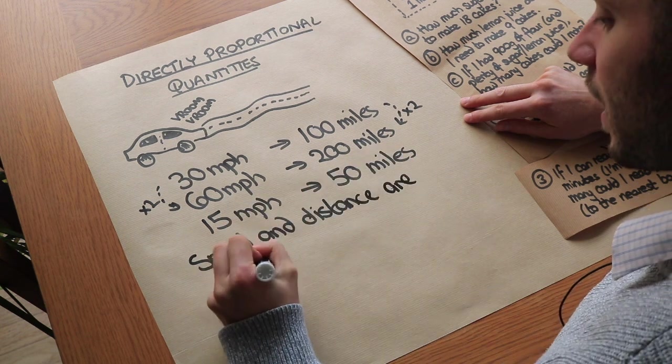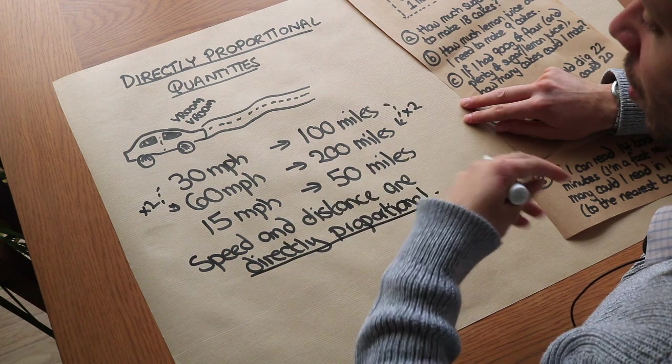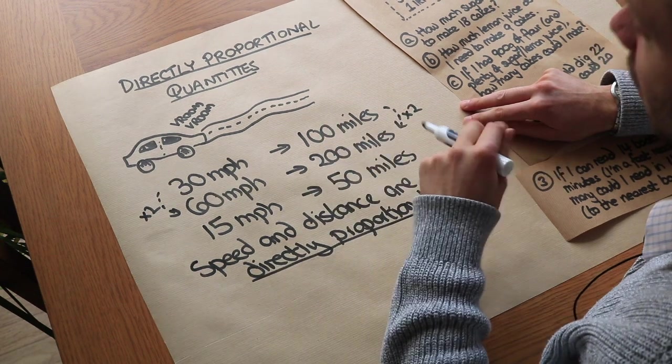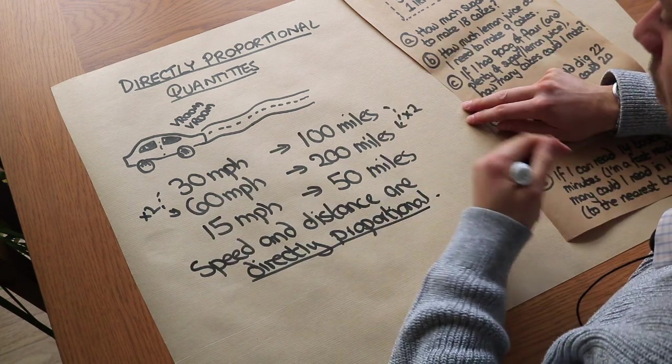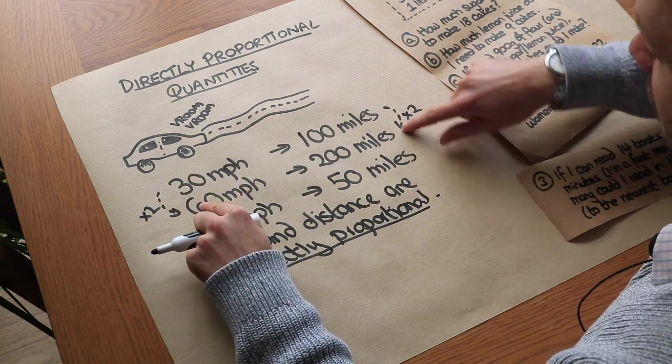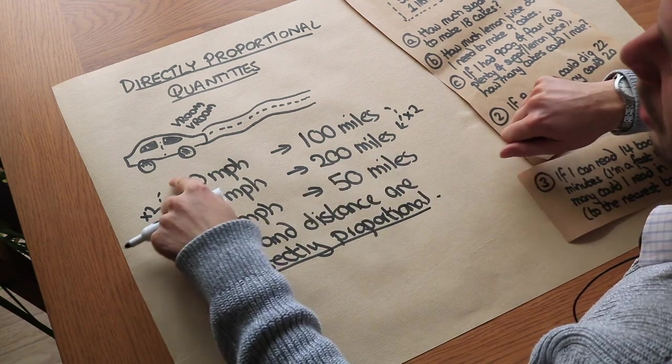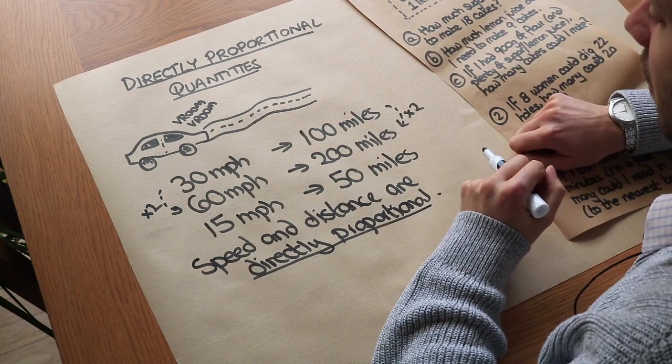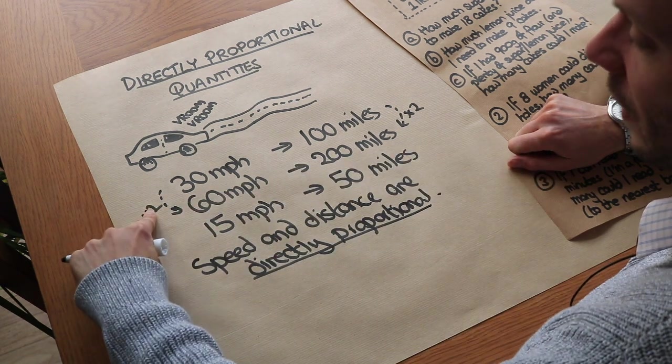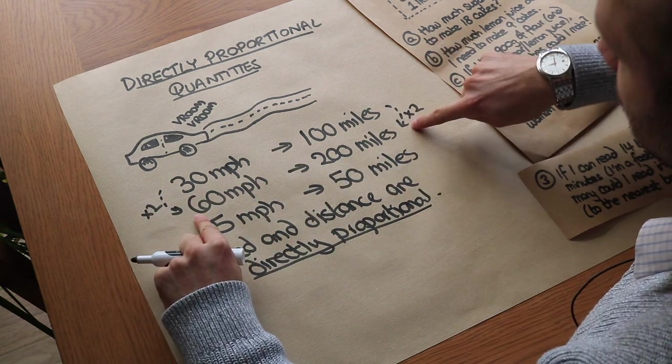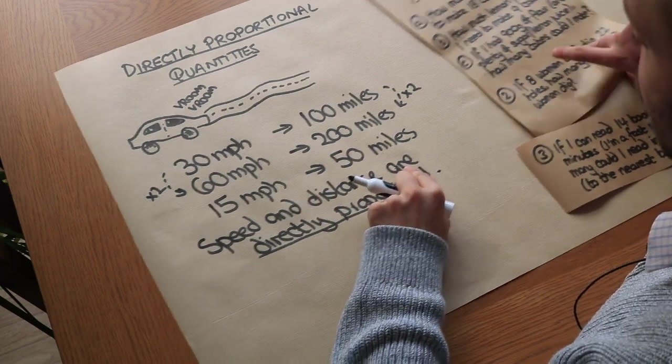And we say that the speed of the car and the distance are directly proportional. And that just means that whatever you times one of the values by, you'll times the other by the same. Whatever you divide one of the values by, you'll divide the other by the same. So if we double the speed, we double the distance traveled. If we triple the speed, we triple the distance traveled. So it's really identifying what that scaling is and making sure you scale the other quantity in the same way.